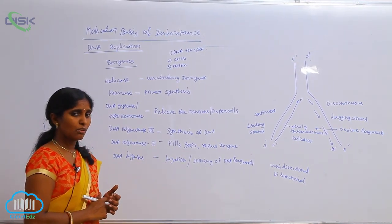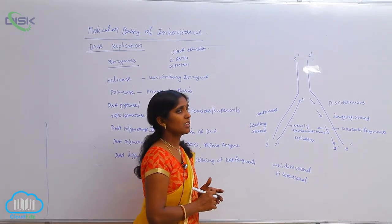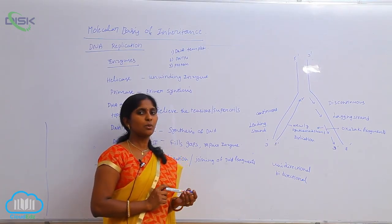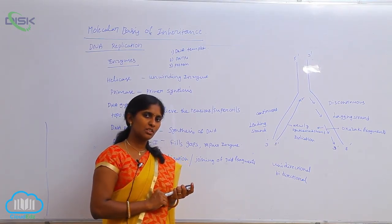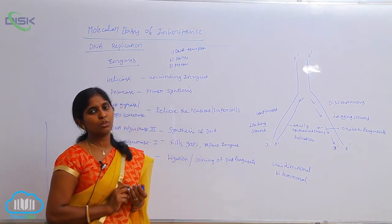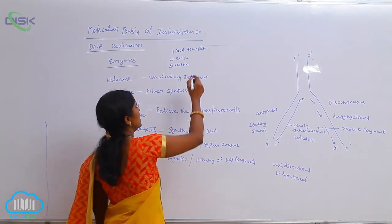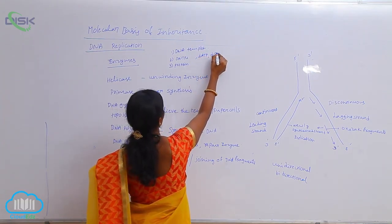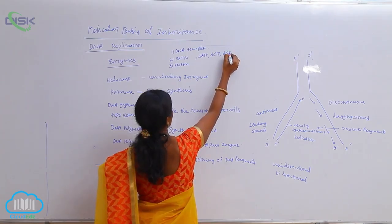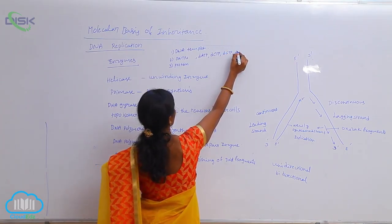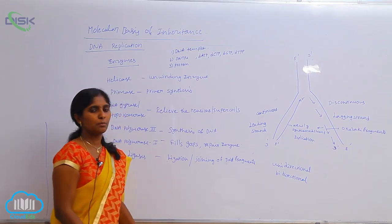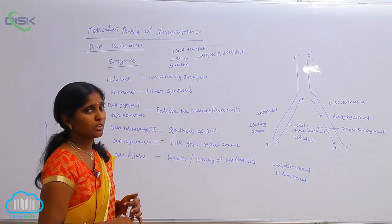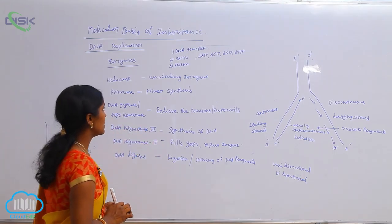The DNA template: one of the strands of the DNA works as a DNA template, meaning replication occurs on a single strand only. DNTPs — deoxyadenosine triphosphate, deoxycytosine triphosphate, deoxyguanosine triphosphate, and deoxythymine triphosphate — these are the DNTPs required for DNA replication.